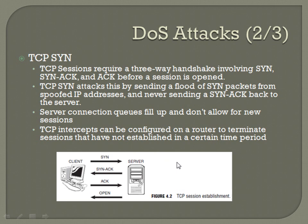The TCP SYN attack DOSes this by sending a flood of SYN packets from a spoofed IP address — an IP address that appears as a valid client to the server. It sends this flood of SYN packets and never sends the ACK back. The server has a queue that can only accept a certain number of SYN packets, say 100 or 200 TCP sessions at a time. If it never gets a response to its SYN ACK packets, it never fully initiates those TCP sessions, and it also blocks legitimate clients from creating a TCP session because the queues are completely filled up.